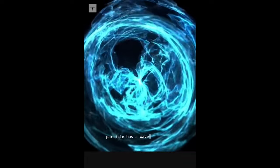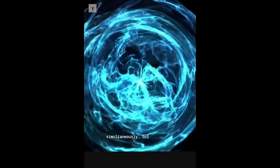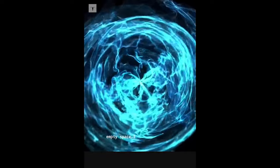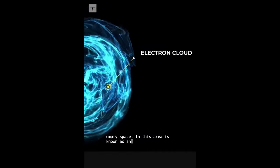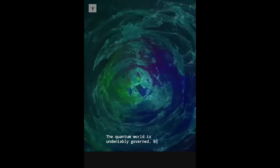The subatomic particle has a wave function, meaning it exists everywhere simultaneously. So electrons are spread out around this empty space, and this area is known as an electron cloud. The quantum world is undeniably governed by probability.